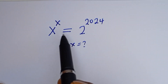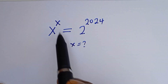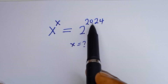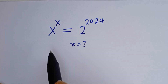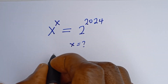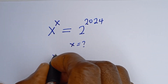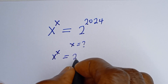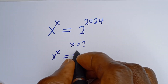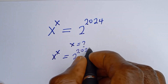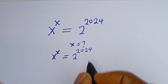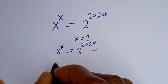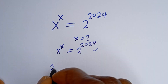Hello. How to solve for s in this beautiful equation: s to the power of s is equal to 2 to the power of 2024. From here we have s to the power of s is equal to 2 to the power of 2024. Now let's consider this right hand side: 2 to the power of 2024.